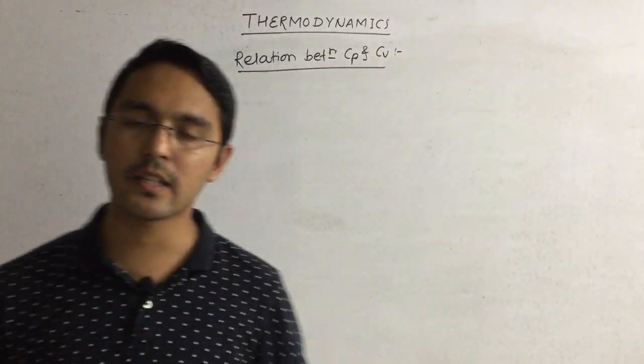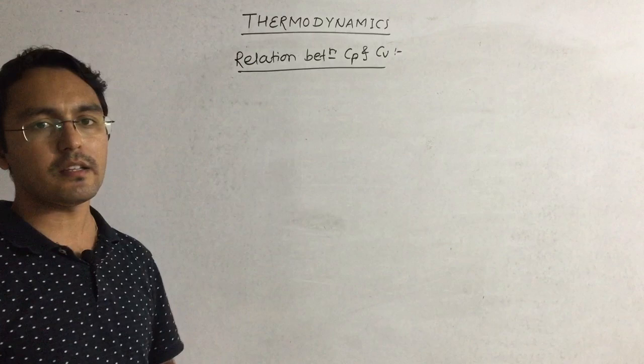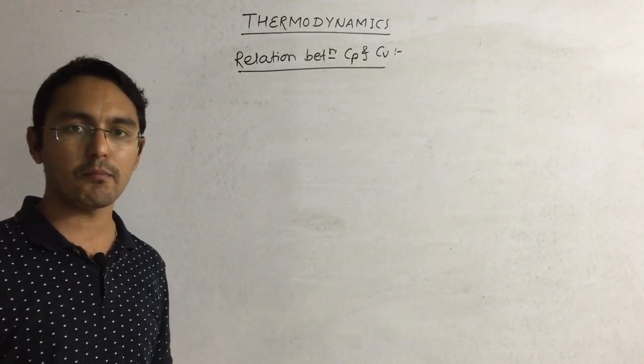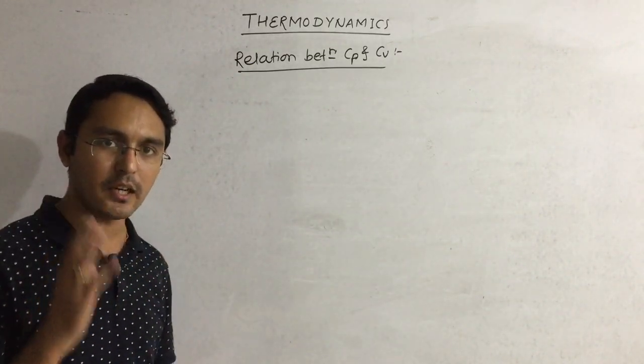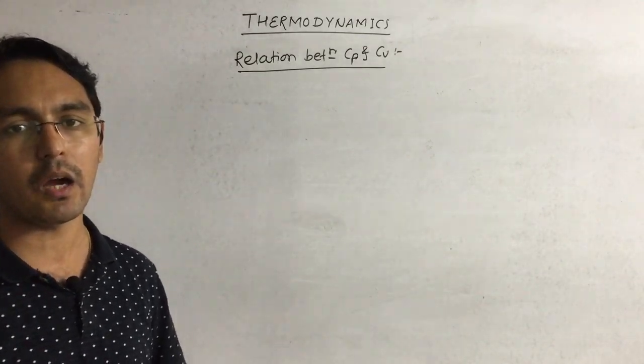Hello everyone, in this video lecture we will talk about the relation between Cp and Cv. Cp is molar specific heat at constant pressure and Cv is molar specific heat at constant volume.